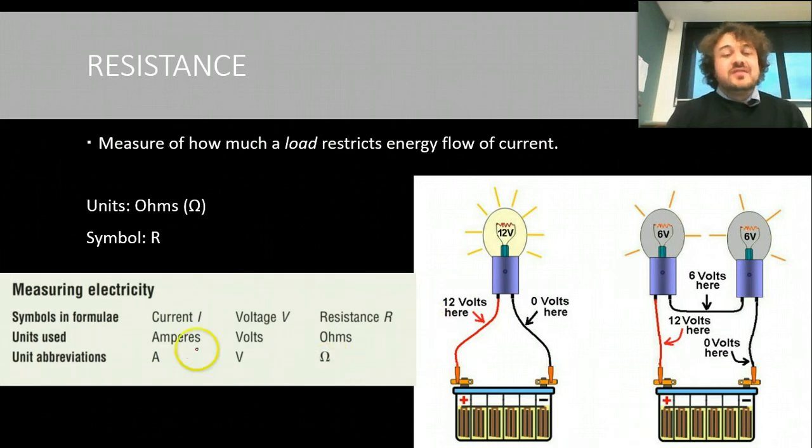So here's our little summary. Summary. The units in, symbols in formula, you see, you've got current, voltage, resistance, IVR. Now the units used are amperes, volts, ohms, and there are the unit abbreviations, which is a better way of saying it than unit symbols.